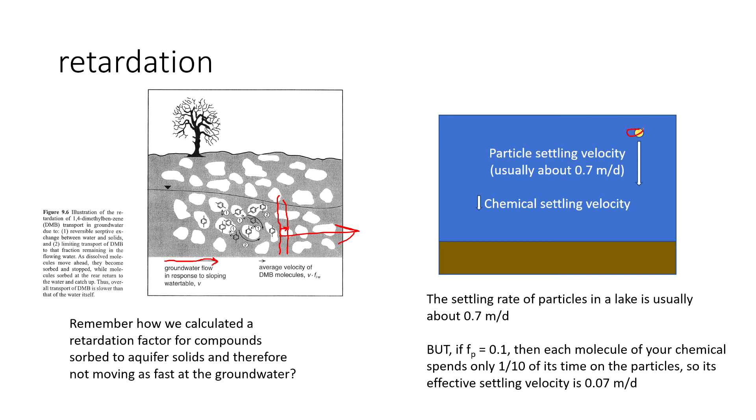So particles settle, and the typical settling velocity for a particle in a lake is about 0.7 meters per day. You might go out and measure your own particular settling rate, but it's going to be about 0.7 meters per day. But if your chemical is not spending very much time absorbed to those particles, then its effective settling velocity is a lot slower. So let's say you go out and you calculate the fraction of your chemical that's on the particles and it's only 0.1 or 10%. Then instead of settling at a rate of 0.7 meters per day, its effective settling velocity is only 1 tenth of that or 0.07 meters per day.